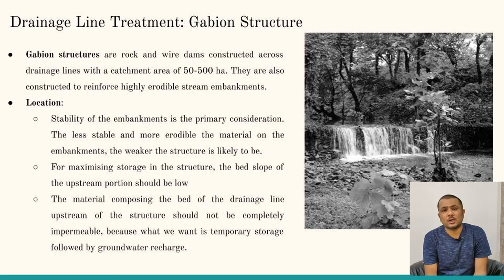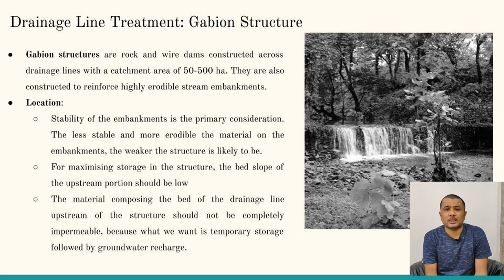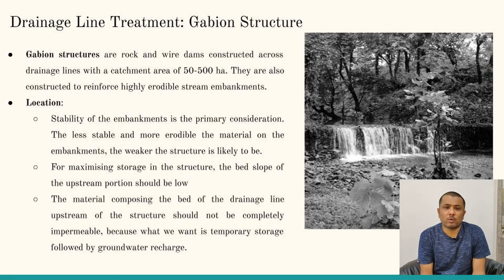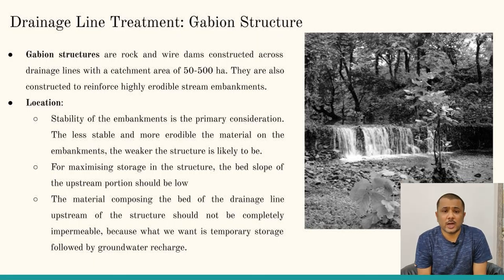For selecting the location of gabion structures, three aspects must be considered. First, the embankment must be strong enough to hold the gabion structure. Second, the type of material available within the premises. Third, the bed slope — greater the bed slope, lesser the water storage and greater the chance of breaching the gabion structure. Gabion structures are usually overflow-type structures, with water flowing over the top of the weir or crest.